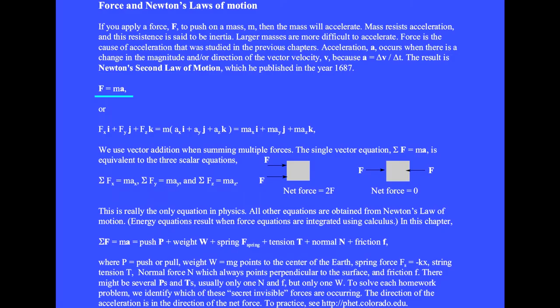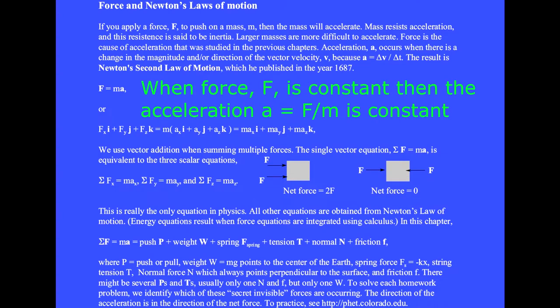Force and acceleration are both vector quantities. When you add vectors, the sum depends on the angle between them. Here are two persons pushing on a block. We can believe that there is a difference between both persons pushing in the same direction or in opposite directions. Force is a vector quantity because it adds like a vector. Notice that when force F is constant, then the acceleration A equals F over M will also be constant, and then we can use the equations of constant acceleration from the previous chapters.